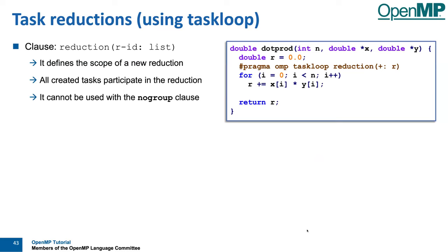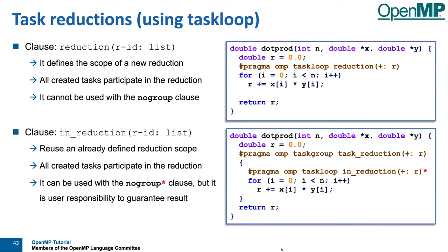Of course, we can have task reductions with taskloop as well. There are two flavors: if taskloop is its own construct with a parallel loop that you want to reduce, you can use reduction just like with a standard work-sharing construct. Taskloop also has an additional flavor where it contributes to a task reduction: you open a taskgroup with task_reduction on plus, and then use taskloop in_reduction, meaning the tasks resulting from the loop contribute to the task reduction created by the taskgroup. You can mix and match this with regular tasking — some tasks from task loops and some regular tasks both contributing to the same taskgroup result.